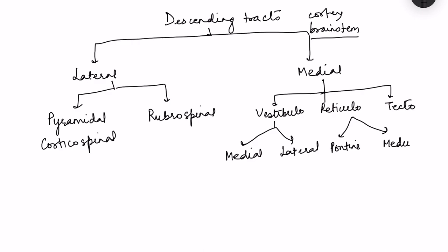From the names of these descending tracts we can tell where they originate. The corticospinal tract originates from the cortex and terminates in the spinal cord. The rubrospinal tract originates in the red nucleus of the midbrain. The vestibulospinal tract originates in the vestibular nuclei. The pontine reticulospinal tract arises from the pontine reticular formation, the medullary reticulospinal tract from the medullary reticular formation, and the tectospinal tract arises from the collicular nuclei of the midbrain.